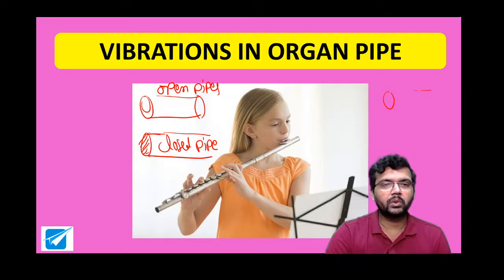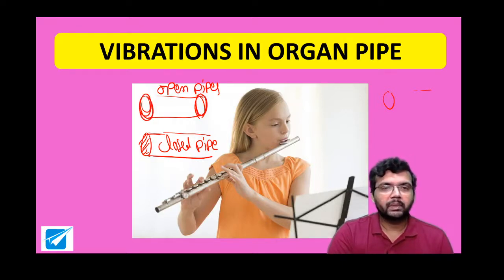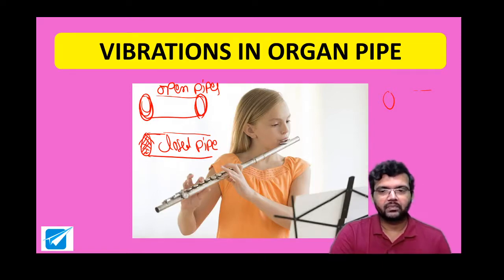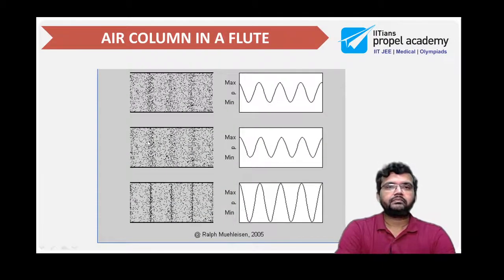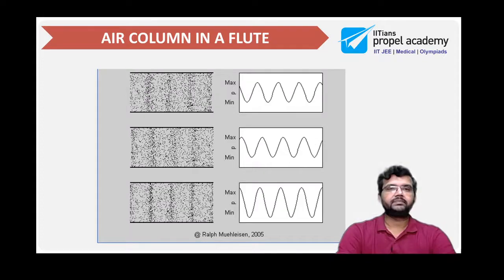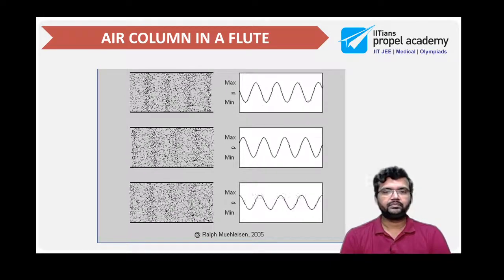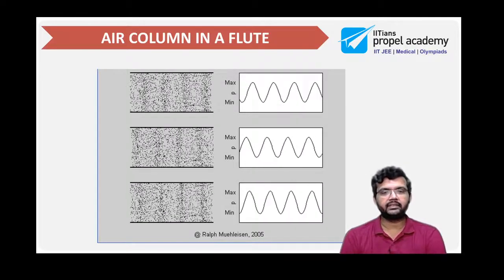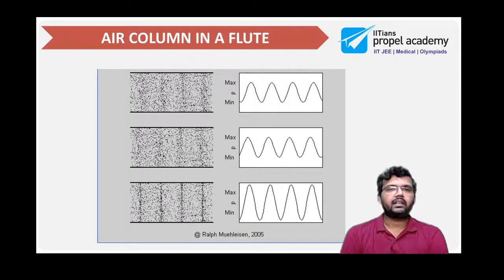In an open pipe, both sides are opened. In a closed pipe, only one side is open — one side is closed, the other side is open. Now, before going to that, let us try to understand how we will have a stationary wave in an organ pipe.